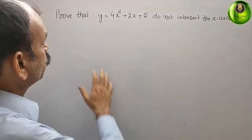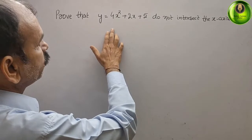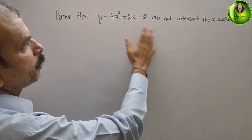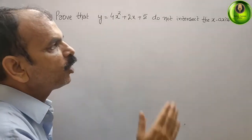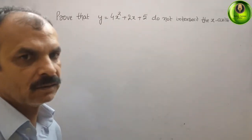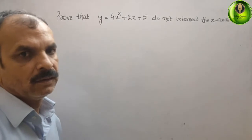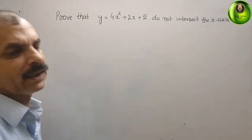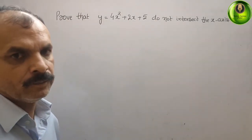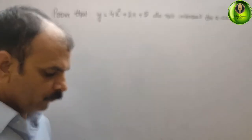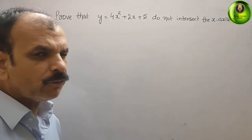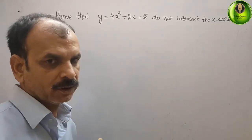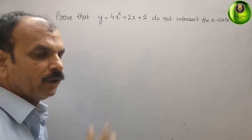The question is: prove that y = 4x² + 2x + 5 does not intersect the x-axis. They have told it will not intersect. What we have to do is go for a completing the square method first, then I will tell you why it will not intersect.